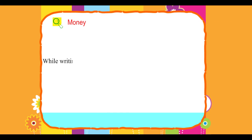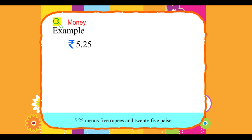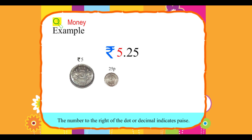While writing rupee and paisa together, separate them with a dot. For example, rupee 5.25 means 5 rupees and 25 paisa. The number to the left of the decimal or dot indicates rupees, and the number to the right of the dot or decimal indicates paisa.